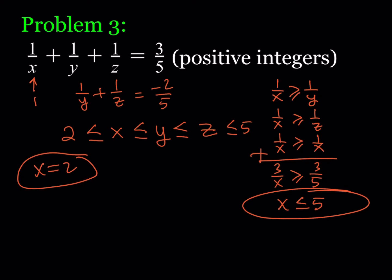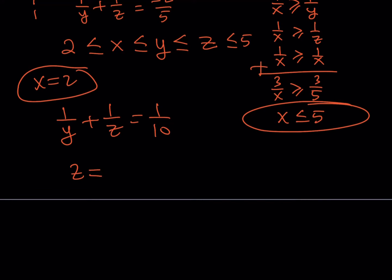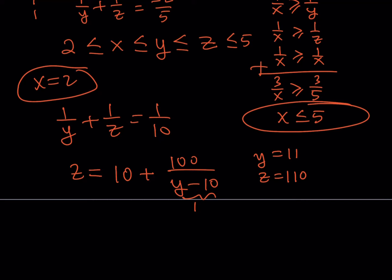If x = 2: 3/5 − 1/2 = 1/10, so 1/y + 1/z = 1/10. Isolating z in terms of y, you can replace y with values such that (y − 10) divides 100. For example, y − 10 = 1 means y = 11, giving z = 110. So (2, 11, 110) is one solution.